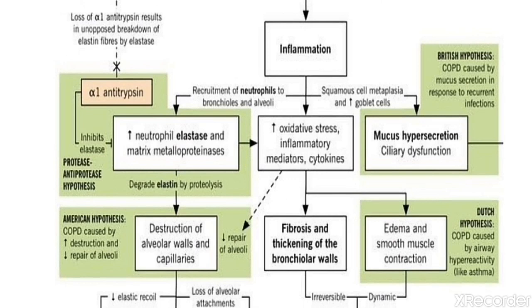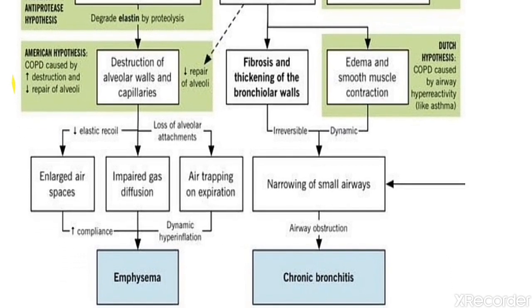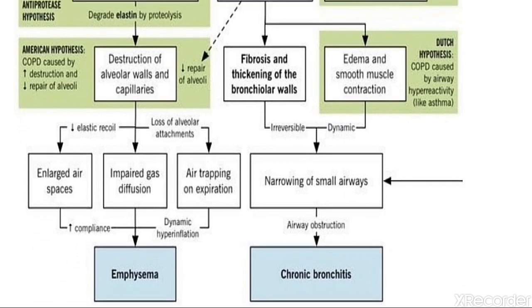Any noxious stimulus leads to decreased elastin by proteolysis and destruction of alveolar walls and capillaries. Elastic recoil decreases, enlarged air spaces increase compliance. Loss of alveolar attachment causes air trapping on expiration — we cannot expel the air out. This leads to impaired gas diffusion and dynamic hyperinflation. Increased compliance leads to emphysema. In COPD, compliance is increased and elastic recoil is decreased, because compliance is inversely proportional to elastic recoil.